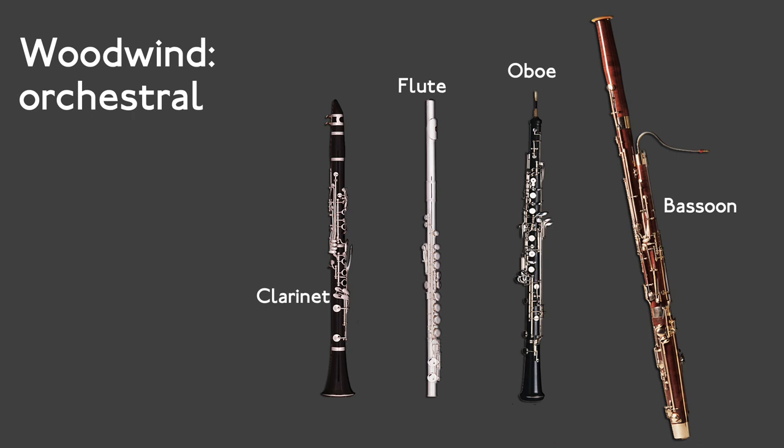The clarinet, oboe, and bassoon all have reeds; the flute doesn't. You make the sound by blowing air across the hole in the mouthpiece, a bit like when you make a sound by blowing across the top of a bottle. Modern flutes are mostly made of metal, but historically they were made from wood.